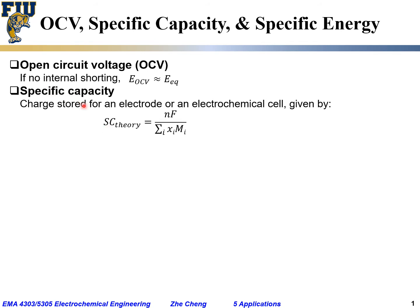And then the specific capacity theory means, theoretically, the number would be nF divided by sigma i of x_i M_i, i for different species.